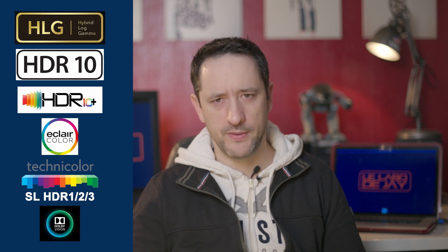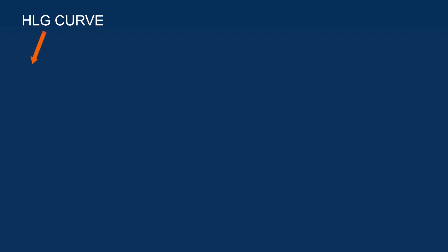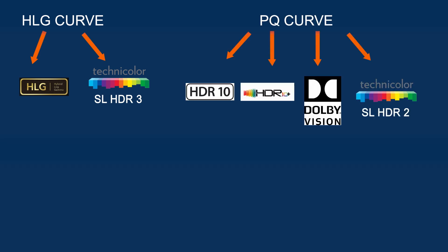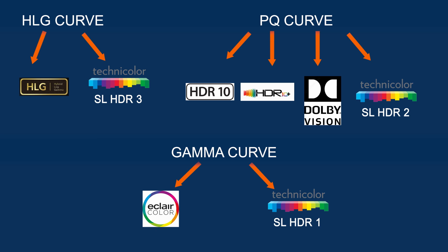Today there are six standards of HDR: HLG, HDR10, HDR10+, Eclair Color, Technicolor SLHDR, and Dolby Vision. Each of these standards has a very specific EOTF curve. HLG and SLHDR3 are based on the HLG curve. HDR10, HDR10+, Dolby Vision and SLHDR are based on the PQ curve. Eclair Color and SLHDR1 are based on gamma curve.